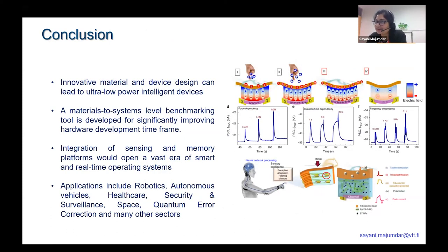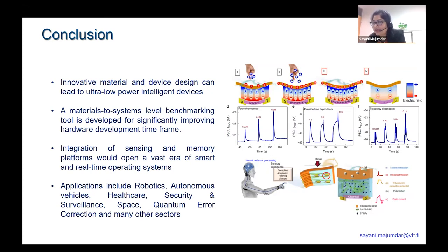I come finally to the conclusion: different innovative material and device designs are very important and crucial for ultra-low-power intelligent devices. The material-to-systems level benchmarking tool is something we are working on for significantly improving the hardware development timeframe. Integration of sensing and memory platforms is opening up a vast era of smart and real-time operating systems, with applications in robotics, autonomous vehicles, healthcare, security and surveillance, space, and even quantum error correction.